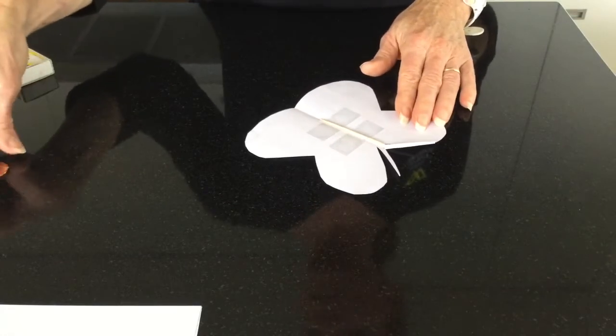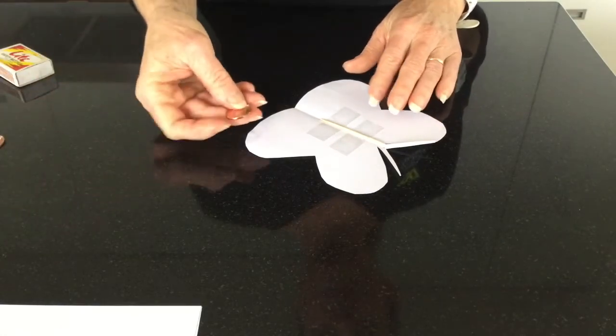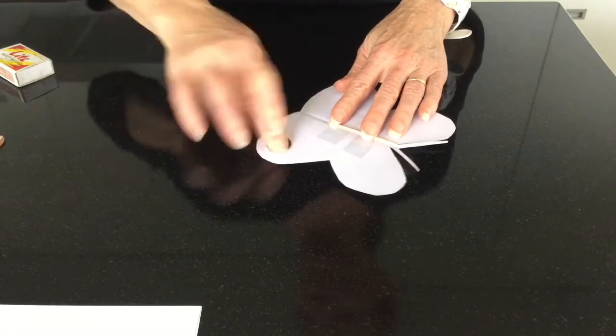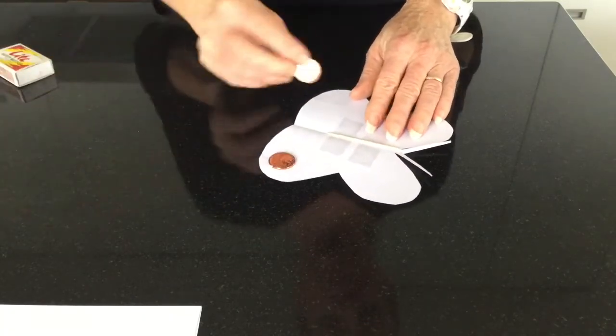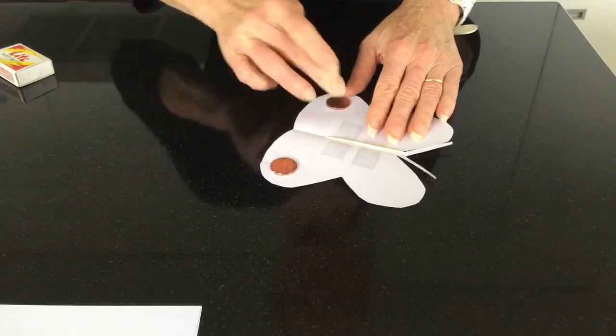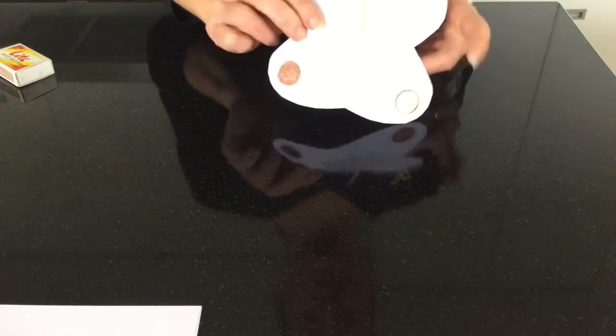Now take a toothpick and tape it to the butterfly. Now, with two 10 cent pieces, attach some double sided tape and fix these to the inside of the butterfly's wings. Like so.